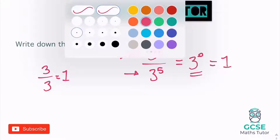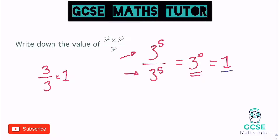So therefore three to the power of zero must equal one. And this rule applies for everything — anything to the power of zero is going to equal one. It doesn't matter what I pick: whether I pick five to the power of zero, that equals one. I could pick anything — 49 to the power of zero — that also equals one. Just thinking about this logic: anything divided by itself has to equal one, and that's how we get a power of zero.